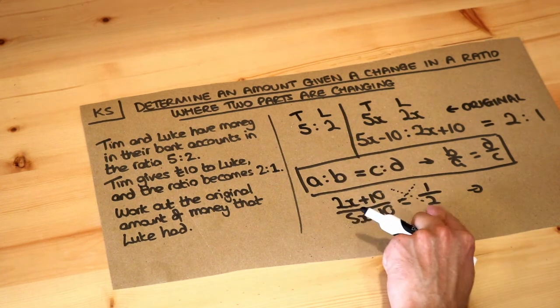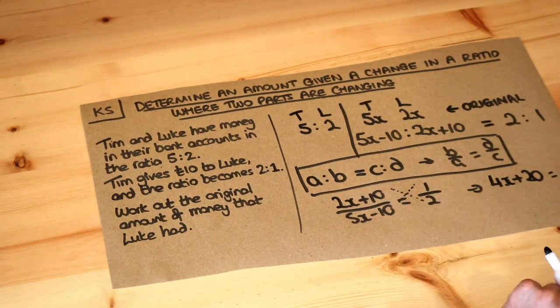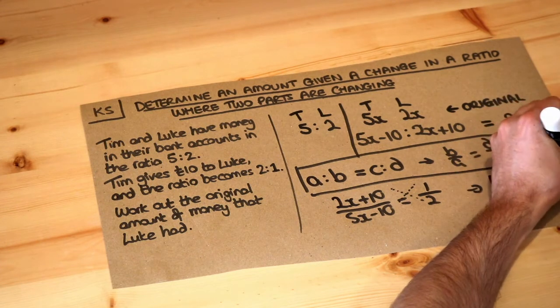So 2x plus 10 times 2 which is 4x plus 20 is equal to 1 times 5x minus 10. 5x minus 10.